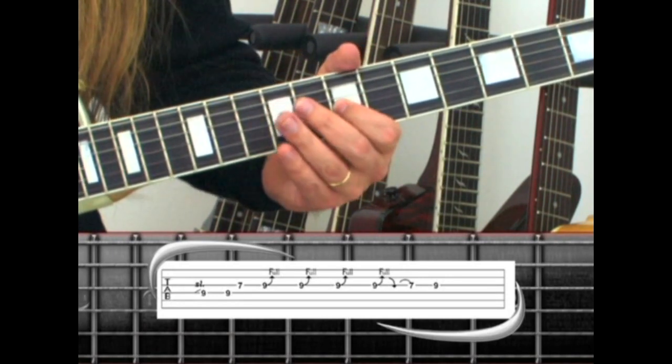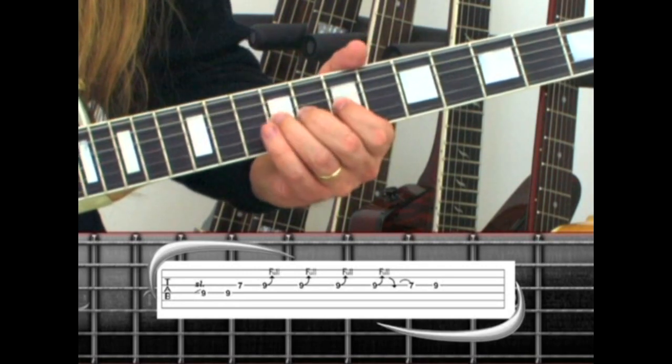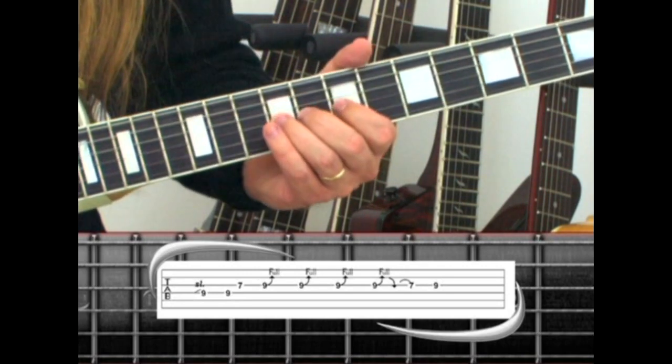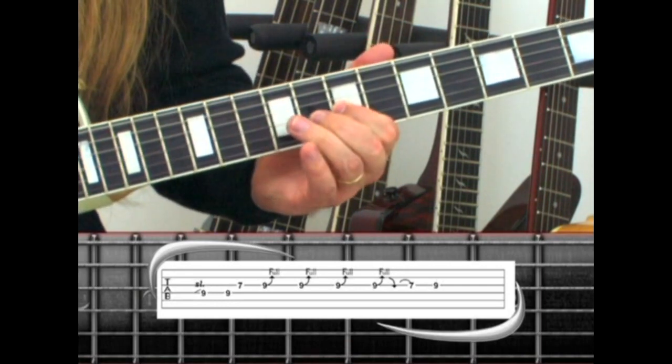Move to the third string, seventh fret, ninth fret. Bend three times, then bend again, release, pull off to seven, back to nine.